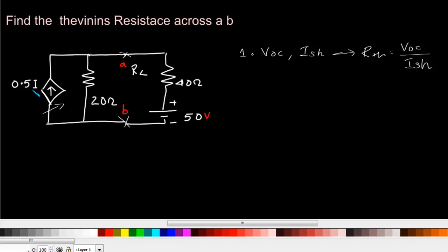Here we have one dependent current source, so we cannot find out what is the Thevenin's resistance directly.